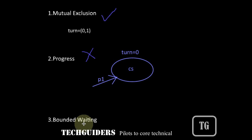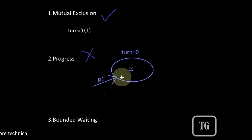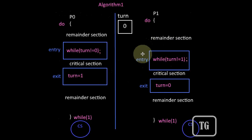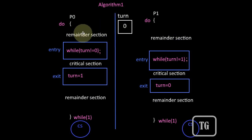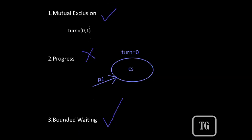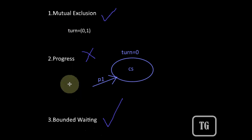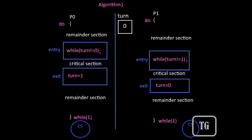Finally, what about bounded waiting? After one process's turn, the next chance is always given to the other process, so if one process has made a request there is always a bound on its waiting time — bounded waiting is guaranteed. However, the problem is that whether a process wishes to enter the critical section or not, the next chance is always given to it. The algorithm doesn't check whether the process is interested in entering, and there is strict alternation. As a result, progress is not guaranteed, and since progress is a mandatory condition, this algorithm cannot be considered an optimal solution for the critical section problem involving two processes.